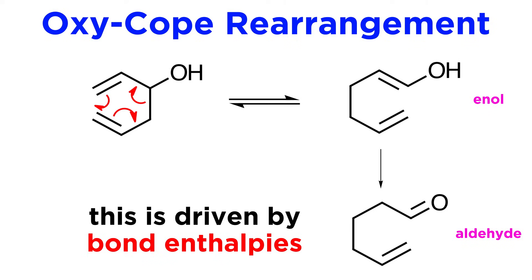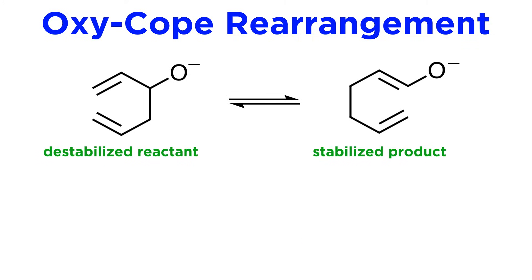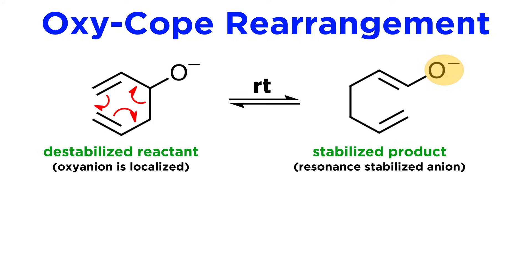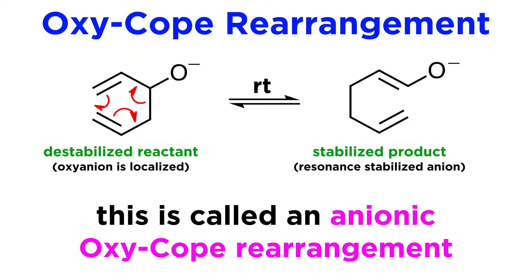This modification of the Cope rearrangement is called the oxy-Cope rearrangement. Now if we combine these approaches — both destabilizing the starting material and stabilizing the product — the reaction becomes favorable enough to occur even at room temperature. Consider the same starting material as the previous example, but with an oxyanion instead of a hydroxyl. This is unstable, as the anion is localized on the oxygen. After the shift, the anion is resonance stabilized. We would call this the anionic oxy-Cope rearrangement, and this technique is prevalent in synthesis.